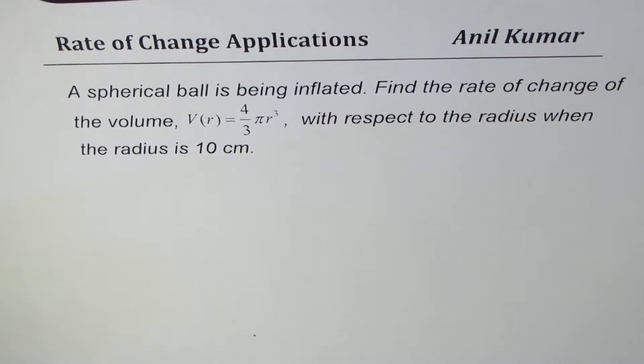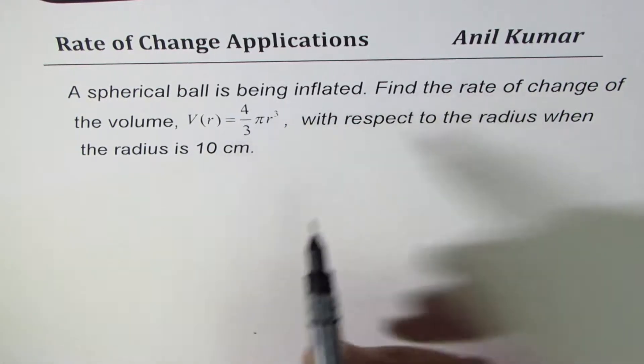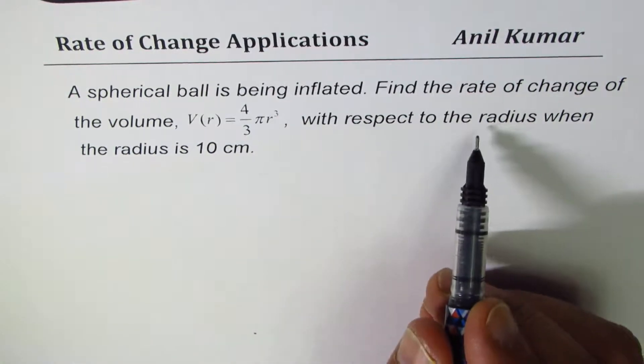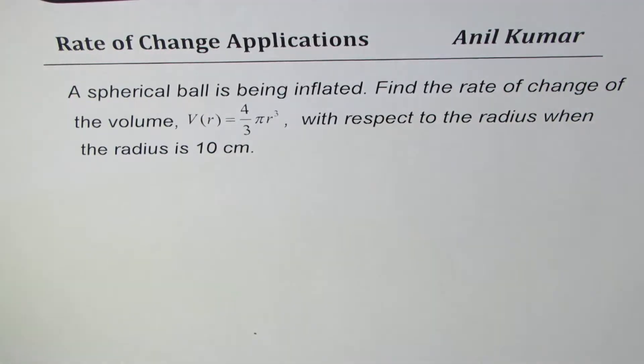I am Anil Kumar sharing with you an application question on rate of change. A spherical ball is being inflated. Find the rate of change of the volume V(r) = 4/3 πr³ with respect to the radius when the radius is 10 centimeters. You can always pause the video, answer the question, and then look into my suggestions.